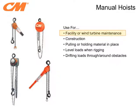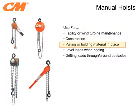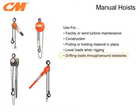Manual hoists can be used in a manufacturing setting or when working on maintaining a wind turbine. They can also be found on job sites to assist contractors during the construction of a wind farm. When pieces of material are being bolted or welded together, manual hoists can be used to pull and hold the pieces in place. Besides being used for lifting a load directly, manual hoists can be used along with lifting slings to help level uneven loads, increasing the flexibility of your slings. Manual hoists can also be used for drifting loads through and around obstacles, which is very important since there is not much room to maneuver within a nacelle of a wind turbine.